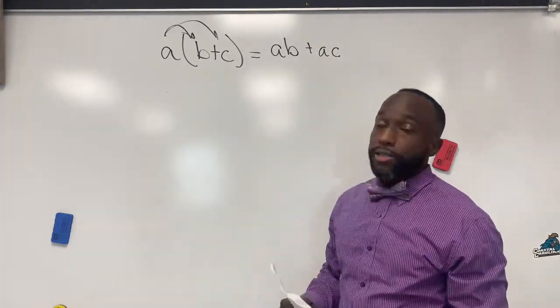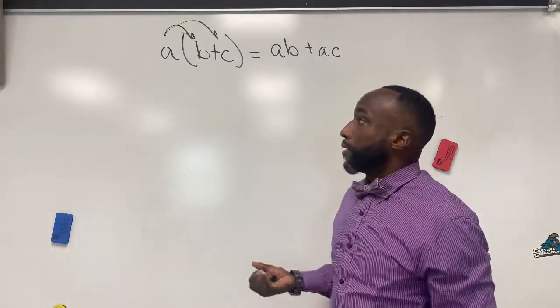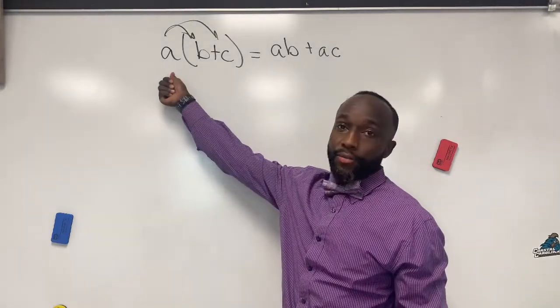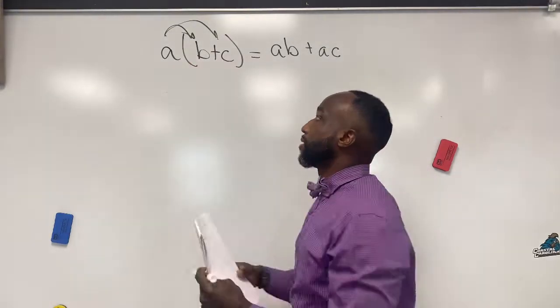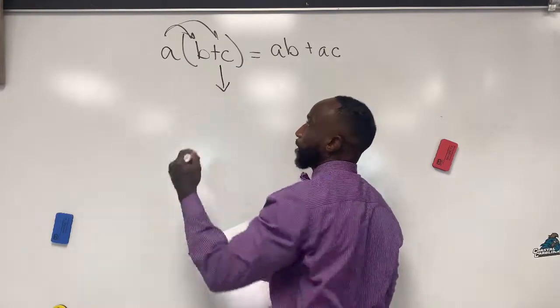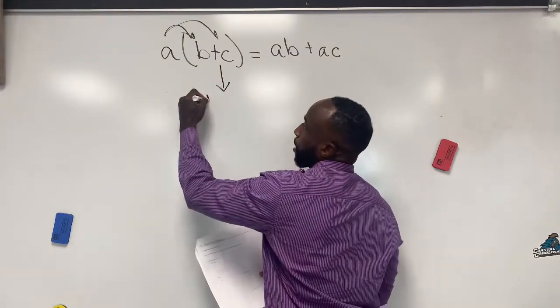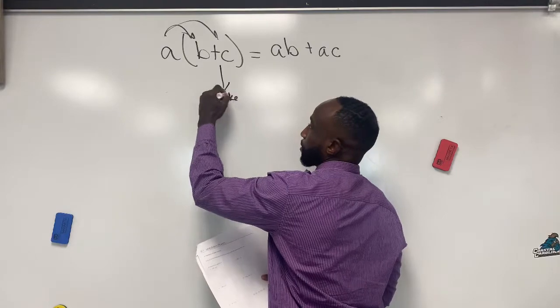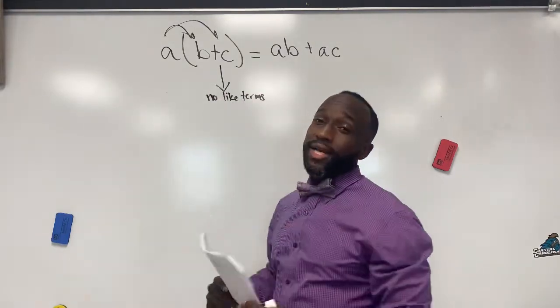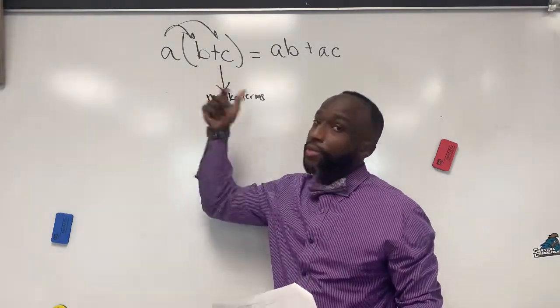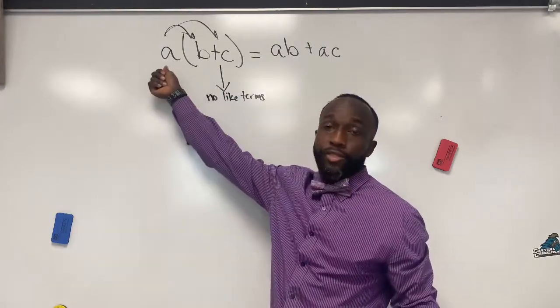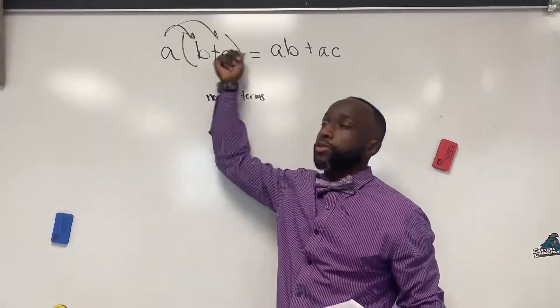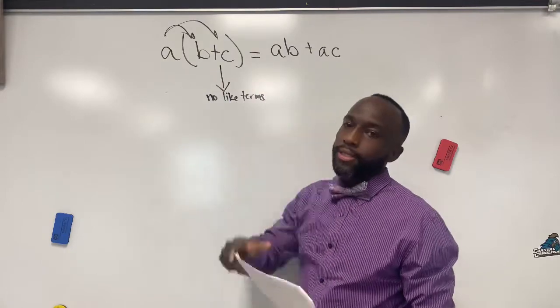It's multiplication of a number, any number that's outside of parentheses, when or if and only if there are no like terms here. So if there are no like terms inside of these parentheses but there are terms there, you use distributive property to multiply through. Let's look at some examples.